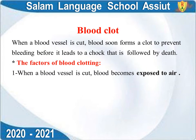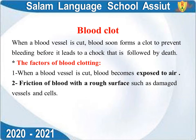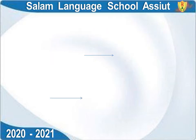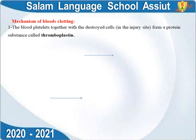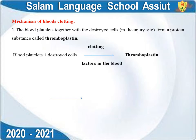Factors of blood clotting: Number one — when a blood vessel is cut, blood becomes exposed to air. Friction also occurs with damaged vessels and cells. At the site of injury, damaged vessels create a rough surface, causing friction between the blood and the rough surface of the vessels.